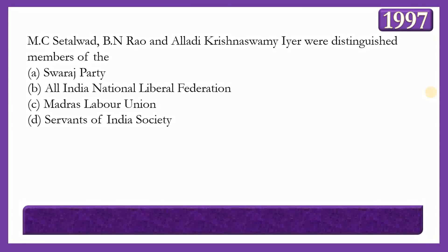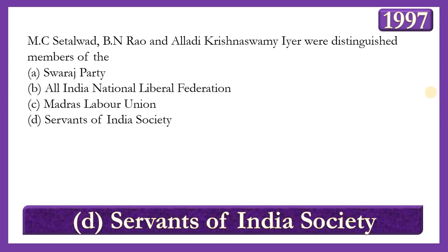Next question: M.C. Setalvad, B.N. Rao, and Alladi Krishnaswami Ayyar were distinguished members of which party? Options: Swaraj Party, All India National Liberal Federation, Madras Labour Union, or Servants of India Society. The answer is option D — the Servants of India Society — which was formed by Gopal Krishna Gokhale in the year 1905 in Pune, Maharashtra, after he left the Deccan Education Society.